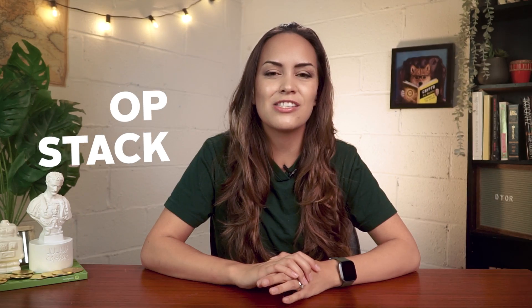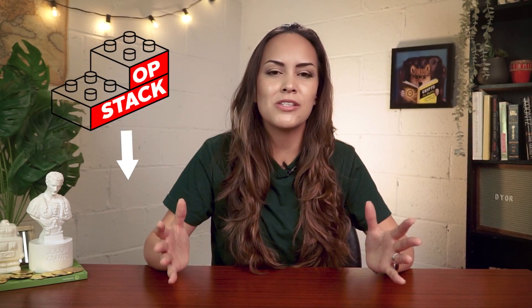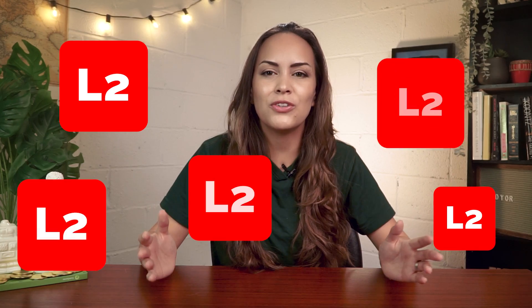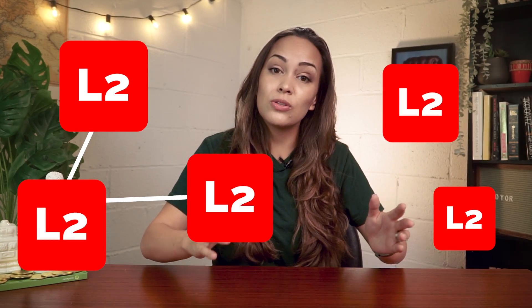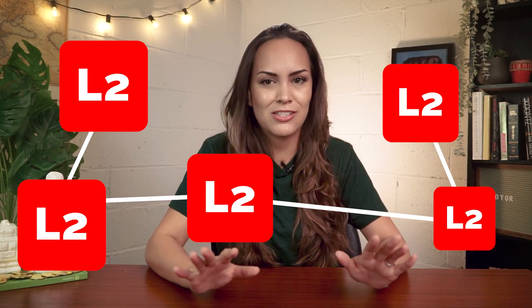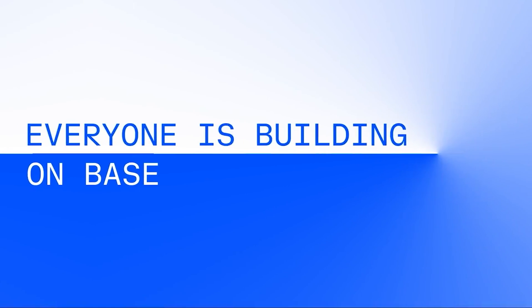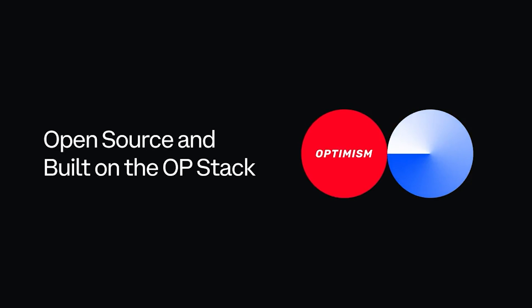The OP stack serves as the building block to enable Optimism's vision of the superchain, which is now shared by many other projects. The superchain would, in theory, enable multiple L2s building with the OP stack to eventually operate with one another seamlessly. Base is also EVM equivalent, so all Ethereum code, tools, and infrastructure works out of the box. As it's built on the OP stack, its technology and performance may not be very different from Optimism or some of the other L2s popping up.